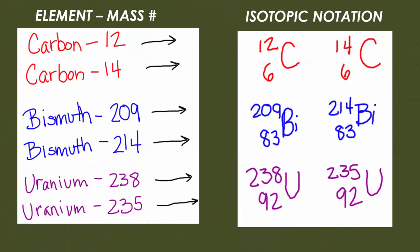If you did it correctly, your isotopic notation should look something like this. Notice that just the mass numbers are going to be different. The symbols remain the same for the elements that are the same, and their atomic numbers — the number in the bottom left-hand corner — also stays the same.